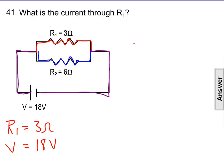Using Ohm's Law, we'll find the current through resistor 1 is equal to the voltage across resistor 1 divided by the resistance at resistor 1. Substituting in the values, we get the current is equal to 18 volts divided by 3 ohms.